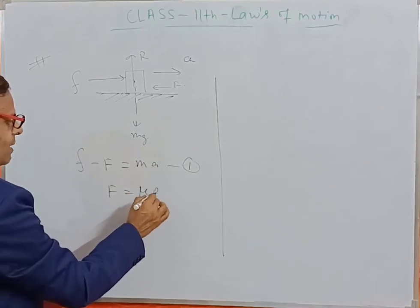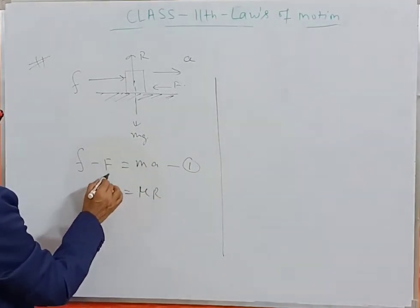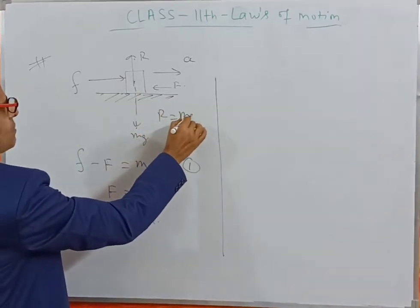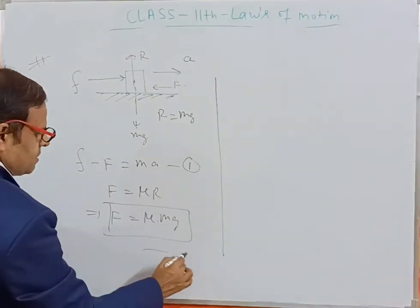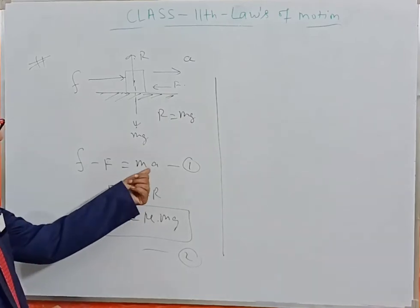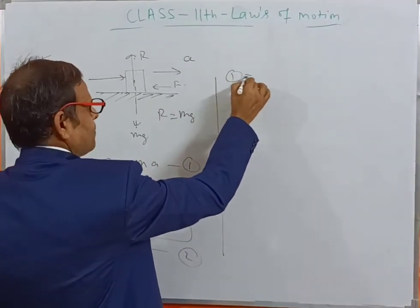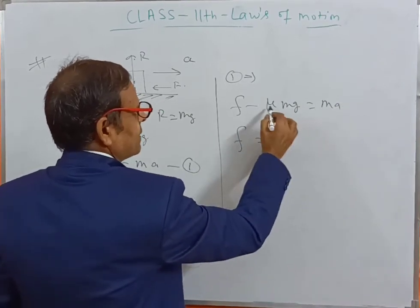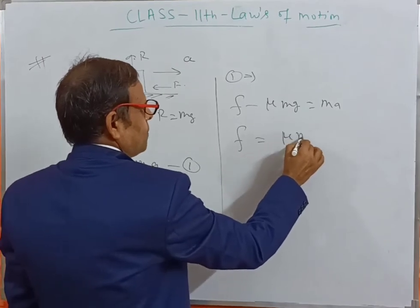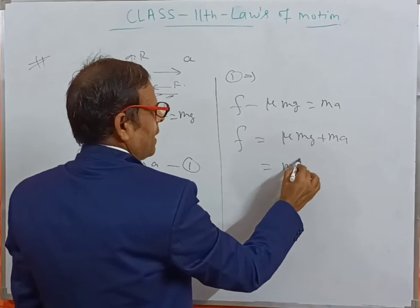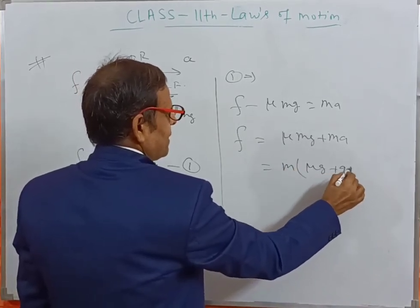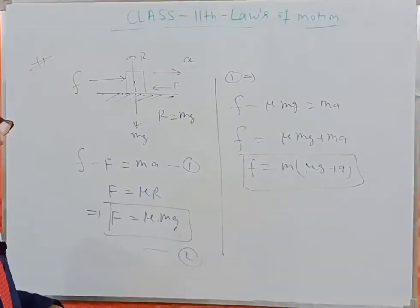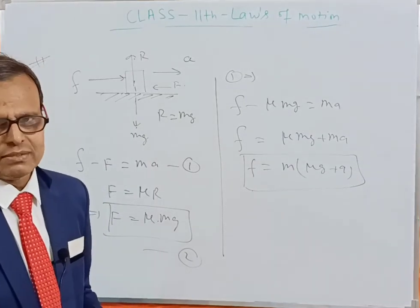Substituting Equation 2 into Equation 1: f minus mu Mg equals MA. Therefore, f equals mu Mg plus MA. Taking M as common: f equals M times (mu g plus A). This is the equation of motion on a rough horizontal surface — very important for solving numerical problems.